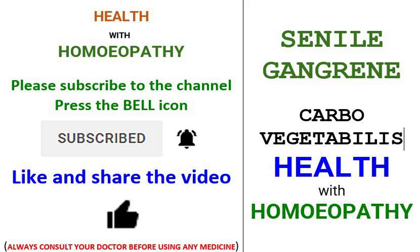Acid dyspepsia with heartburn. Coldness of the surface of the body, feeble pulse. Gastralgia of nursing women with excessive flatulence. Sour and rancid belching. Vomiting of food. The sensitiveness in the stomach or burning sometimes extends into the small of the back.